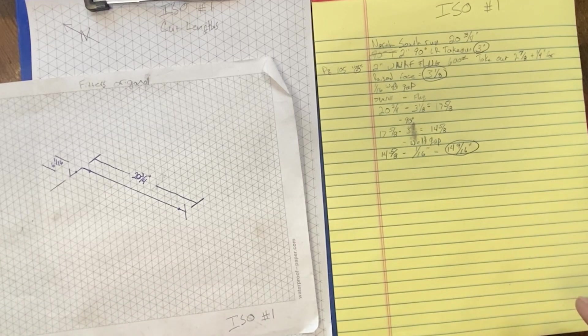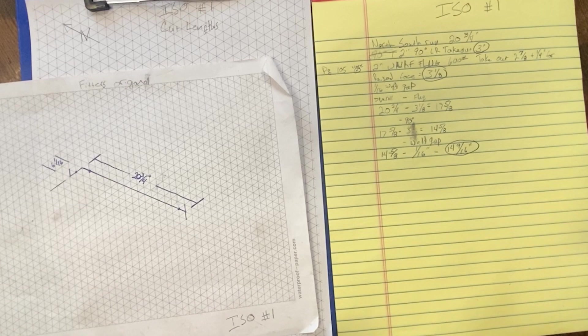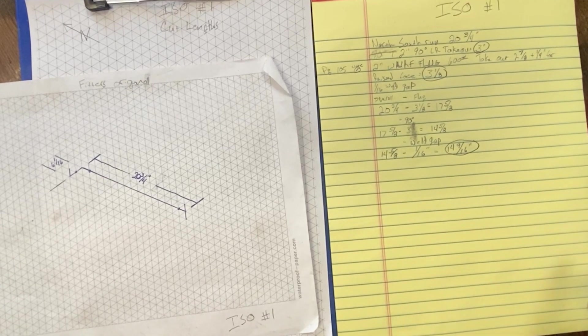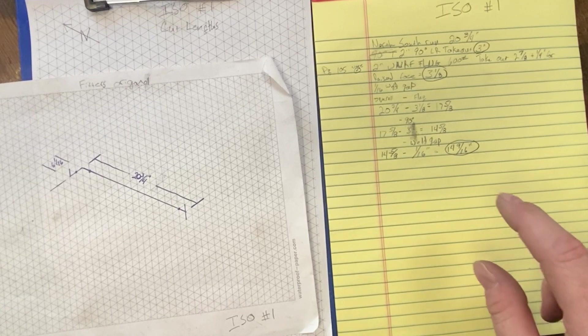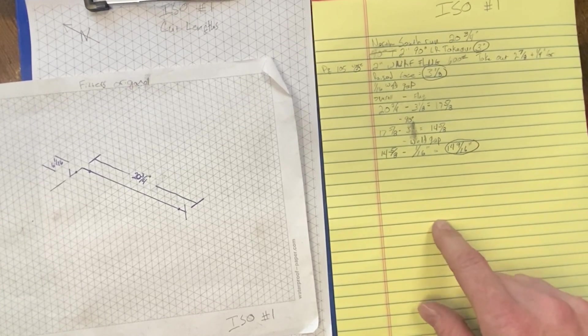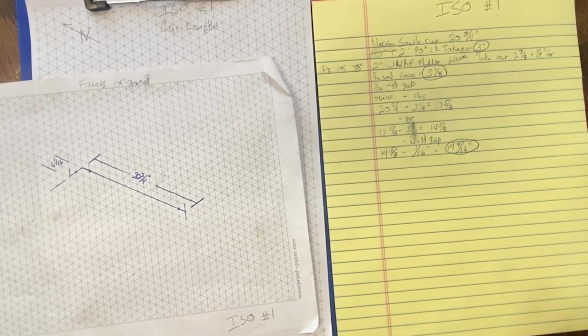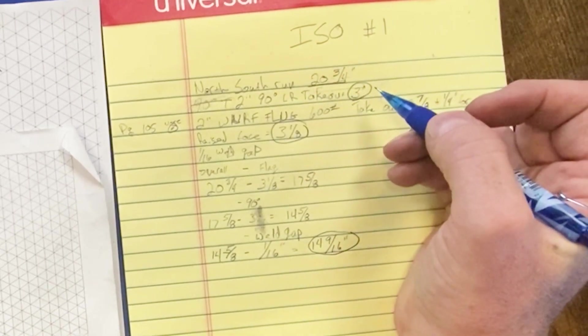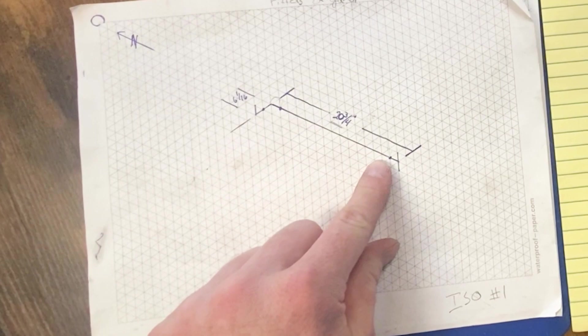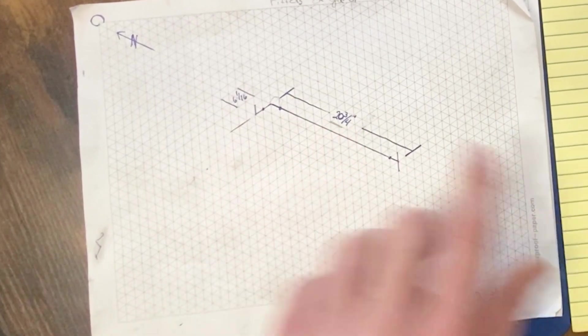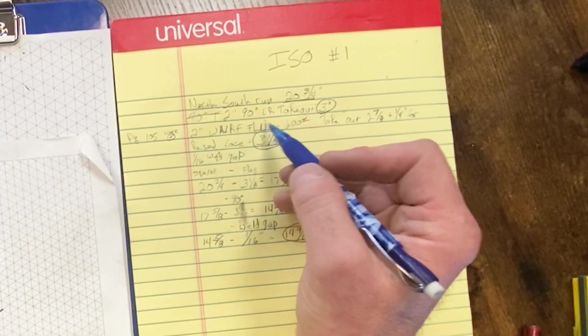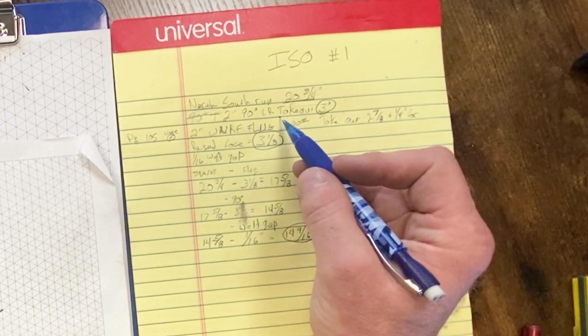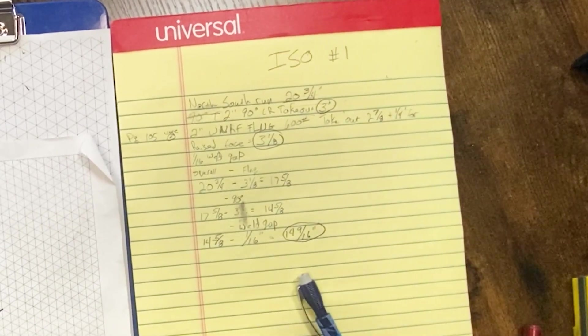So anytime you write down a takeoff, a takeoff being a dimension you have to add or subtract from a fitting, you write that down on your notepad, where it goes, what type of fitting it is, any additional dimensions that go on that fitting. We're going to start with 20 and 3 quarters of an inch. We need to find a piece of pipe that will go between them two fittings and make that dimension. You take a 2 inch 90 degree long radius elbow, the takeout of that is 3 inches and you find that in this blue book right here.